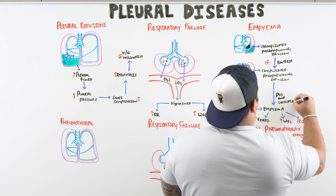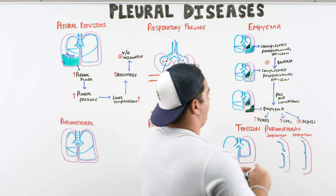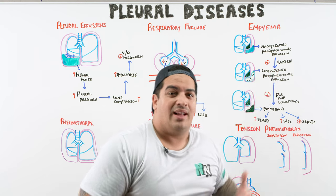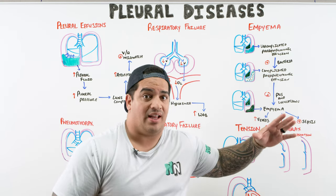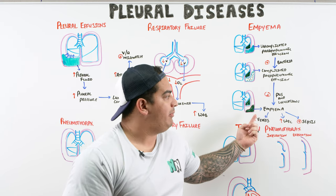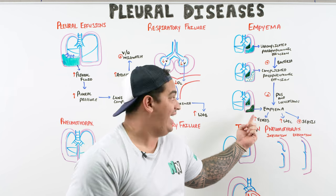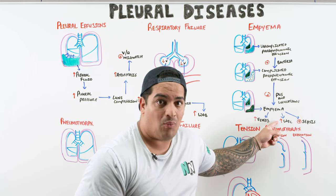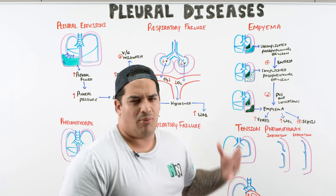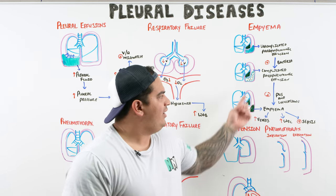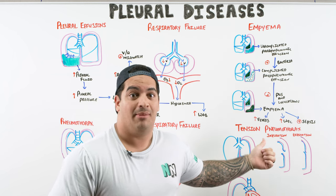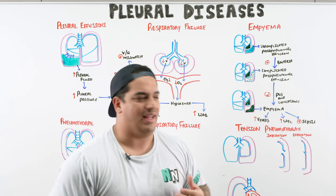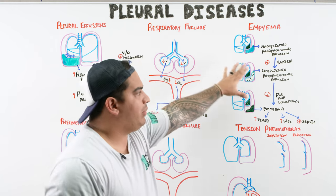The key terminology to understand: an uncomplicated parapneumonic effusion is protein-rich fluid without bacteria; a complicated parapneumonic effusion has bacteria and white blood cells invading the fluid; and an empyema is frankly purulent, pus-containing fluid with loculations and fibrotic material. Empyemas cause persistently high fevers, high white counts, and can precipitate sepsis.